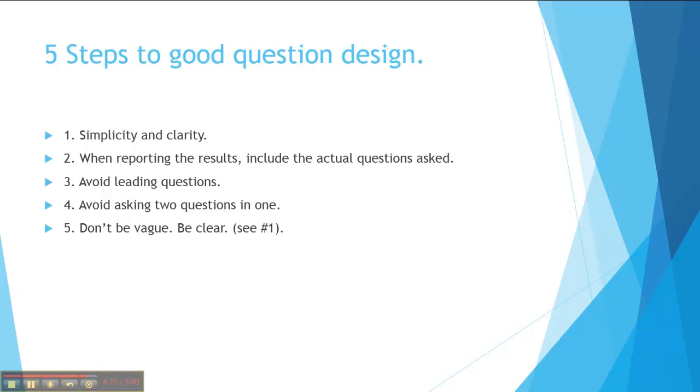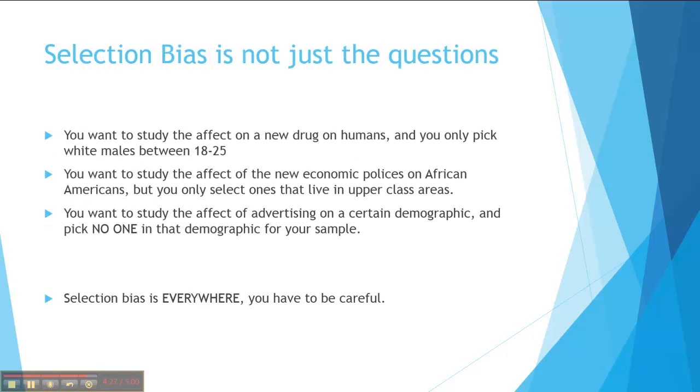So that's the selection bias. It's everywhere. You can even do selection bias by picking your sample wrong. You have to be very, very meticulous and very careful when you are designing your study and who you are studying or whom you are studying or what you are studying. It is very, very, very important.